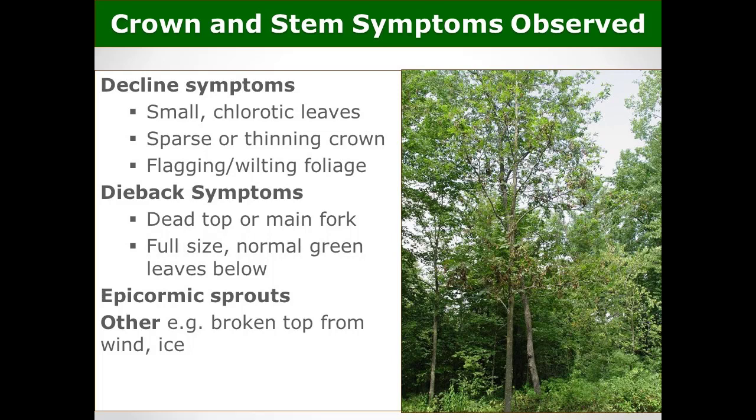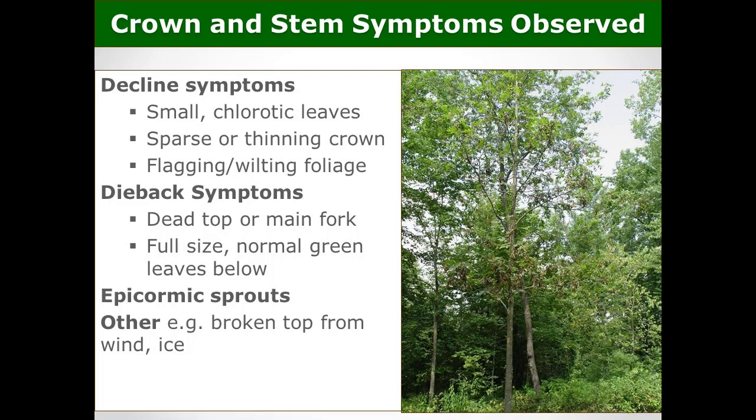What the data showed was that a lot of the symptoms of decline were noted: small leaves, sparse thin crowns, and flagging — when a branch dies and turns off-color like a flag in the canopy. There was also dieback where trees were dying back, and epicormic sprouts from the main stem as the tree's last gasp to keep the root system alive. They observed insect damage — HBB, hickory bark beetle — attack holes on the stem. The damage was much greater on bitternut hickory and smooth-bark hickories than on shagbark.